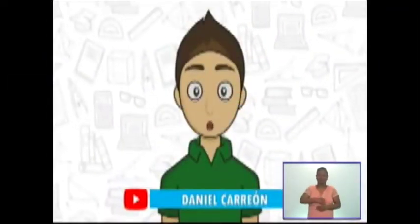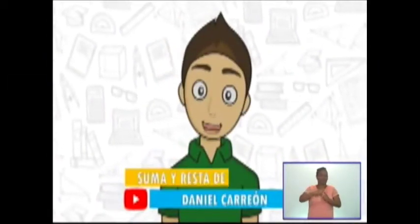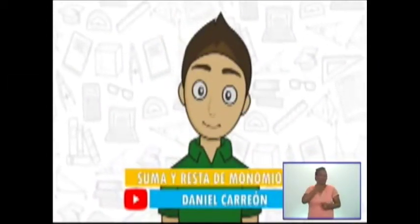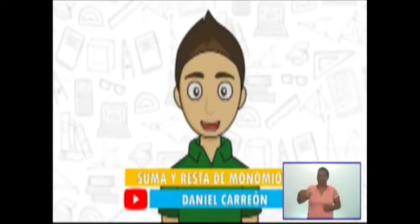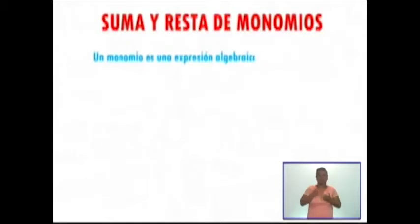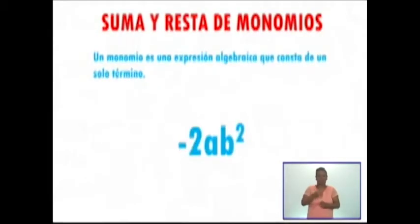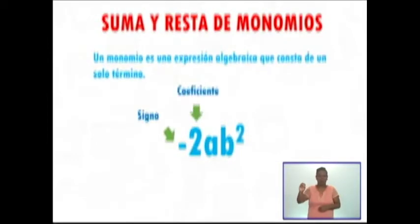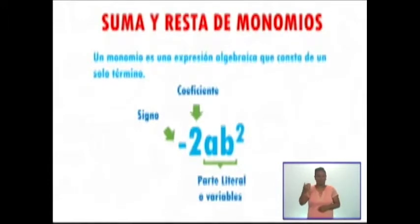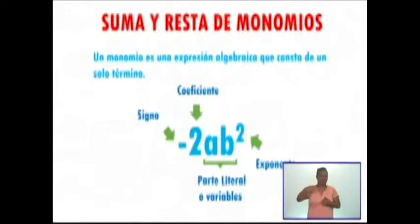Hoy les quiero platicar de uno de mis temas favoritos: la suma y resta de monomios. Pero antes de empezar, repasemos algunos conceptos básicos. Un monomio es una expresión algebraica que consta de un solo término. Vamos a ver las partes de un monomio: son el signo, el coeficiente (que es el número 2), la parte literal o variables (en este caso a y b) y el exponente (que en este caso es 2).